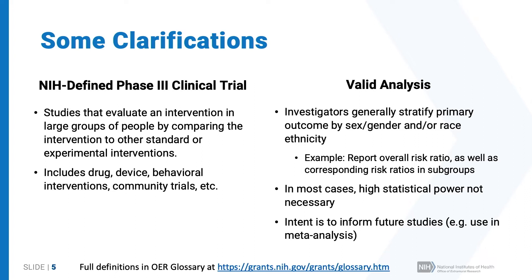A valid analysis expected for NIH-defined Phase III clinical trials involves investigators stratifying their primary outcome by sex or gender and race or ethnicity. For example, if you're reporting an overall risk ratio, you would provide that corresponding risk ratio in those subgroups. In most cases, high statistical power is not necessary, but the intent is really to inform future studies so that information can be combined, for example in a meta-analysis, to help us understand where there may be differences among these groups.